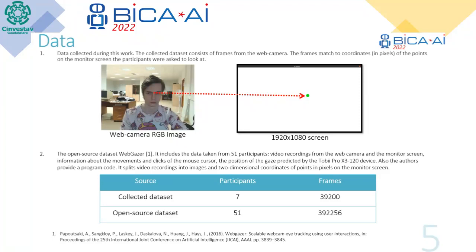The second dataset is the open-source dataset WebGazer. It includes data taken from 51 participants: video recordings from the camera, monitor screen information, movements and clicks on the mouse cursor, and the position of the gaze predicted by the Tobii device. The authors also provide program code that splits the recordings into images and two-dimensional coordinates of points in pixels on the monitor screen. In total, we prepared two datasets: our dataset contains about 40,000 frames, and the open-source WebGazer dataset contains about 400,000 frames.